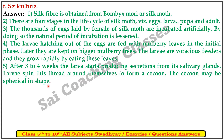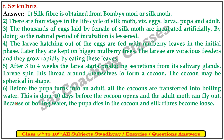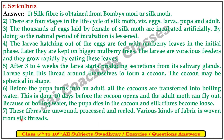The cocoon may be spherical. Before the pupa turns into an adult, all the cocoons are transferred into boiling water. This is done 10 days before the cocoon opens and the adult moth can fly out. Because of the boiling water, the pupa dies and the cocoon and silk fibers become usable. These fibers are unwound, processed, and reeled. Various kinds of fabric are woven from silky threads.